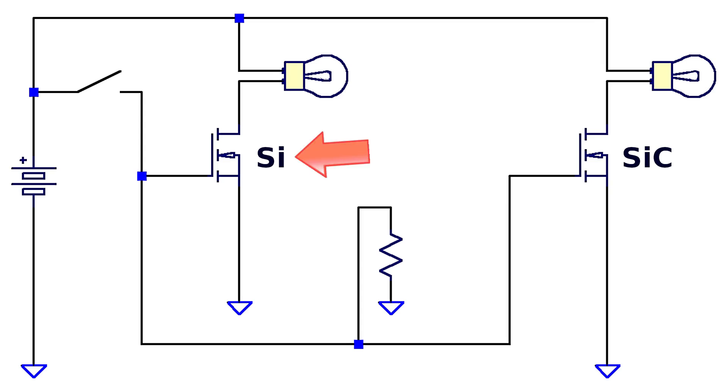It should be noted that the first MOSFET on the left is silicon based, while the second MOSFET on the right is silicon carbide based. The circuit aims to compare the performance and efficiency of the two devices.